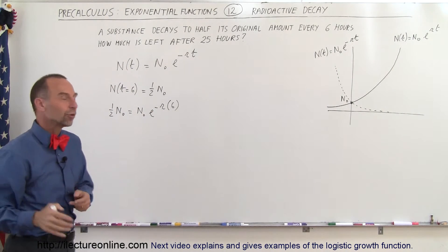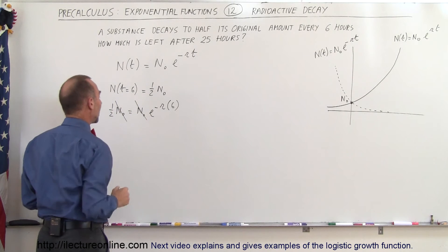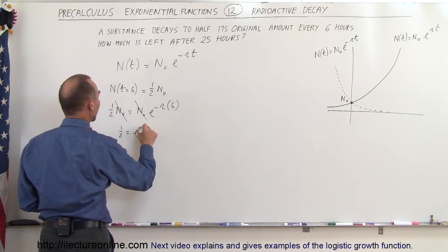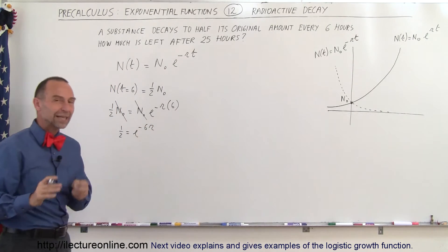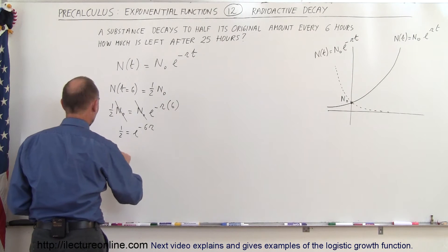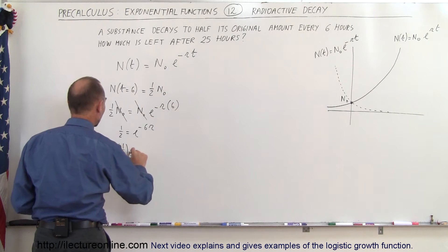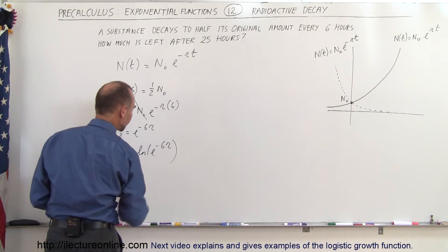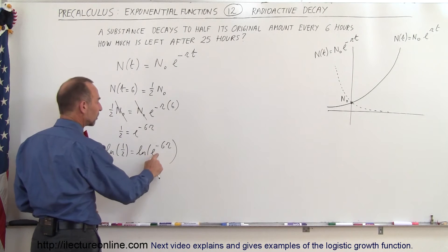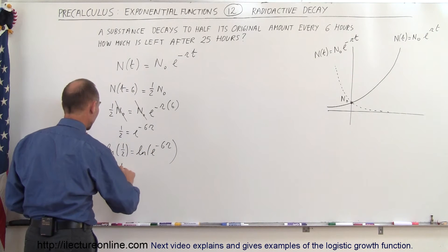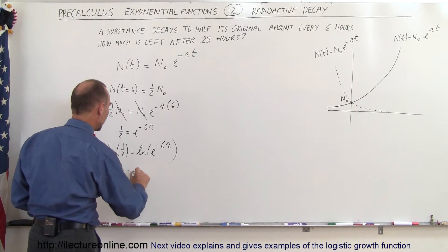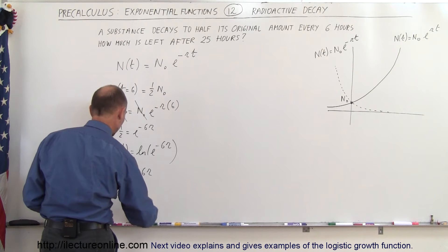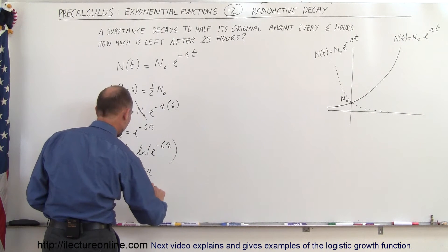We divide both sides by N₀ — that's why it doesn't matter how much N₀ is — giving us one half equals e to the minus six times r. Taking the natural log of both sides, the natural log of one half equals minus six times r, so r equals negative one over six times the natural log of one half.